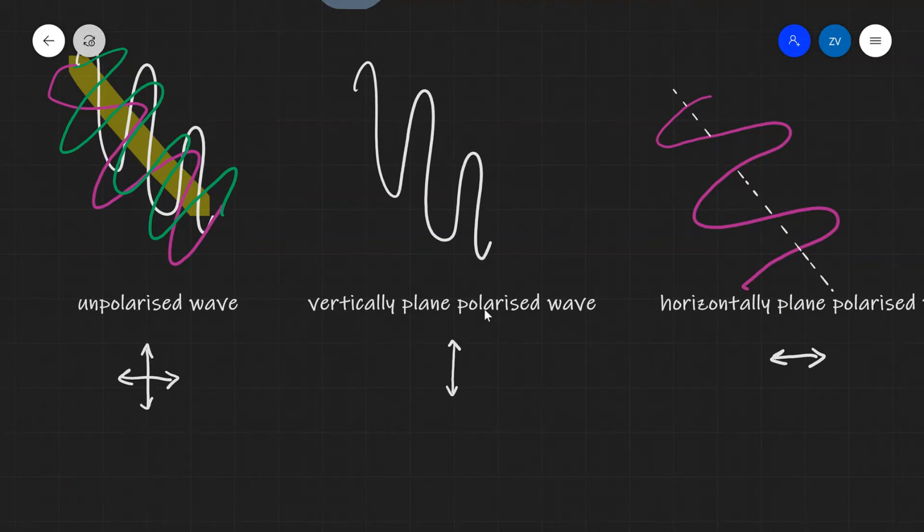And if it's horizontally plane polarized, we can also denote this with a horizontal arrow to show that the electromagnetic field or the particles are oscillating in the horizontal direction.